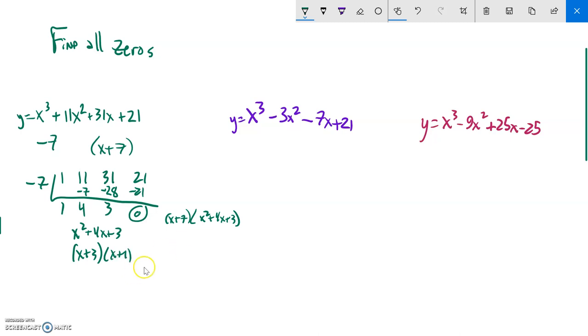So my other zeros then is, remember I'm making zeros. So once I factor it, what makes this a zero? Negative three. What makes this a zero? Negative one. And there are my three zeros. Great. So that's that first one. So let's do that second one.